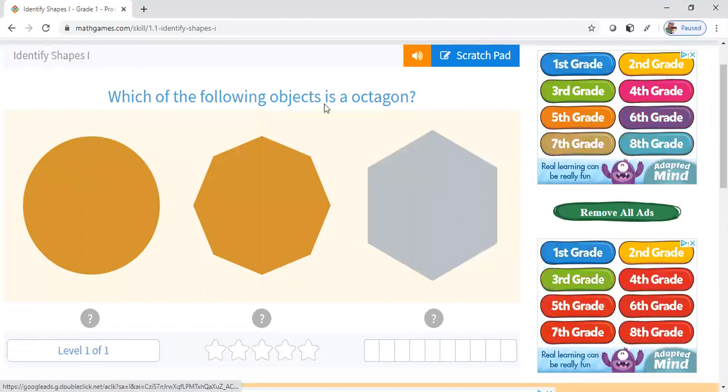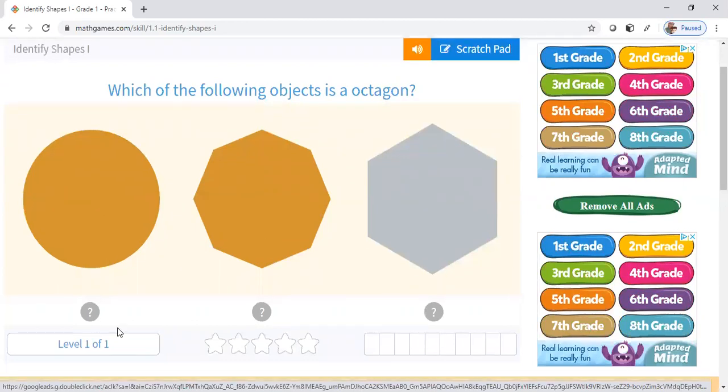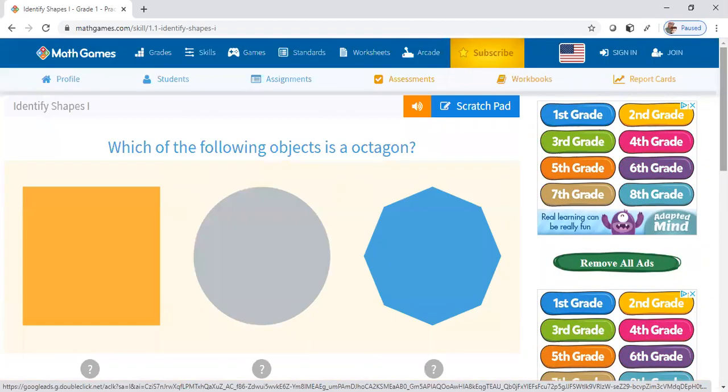So right here it says which of the following objects is an octagon, and it's going to have question marks. Also, as you can see I already picked the wrong one.